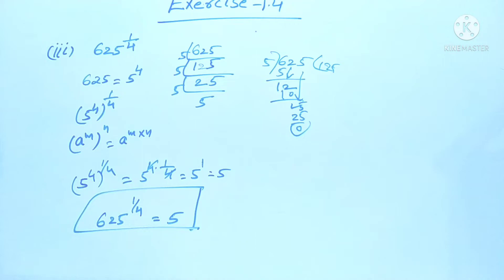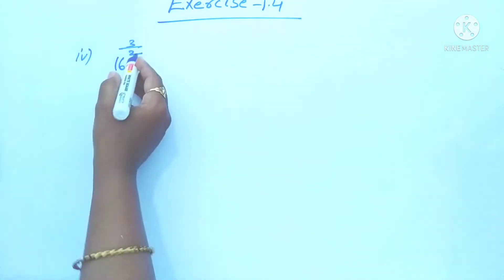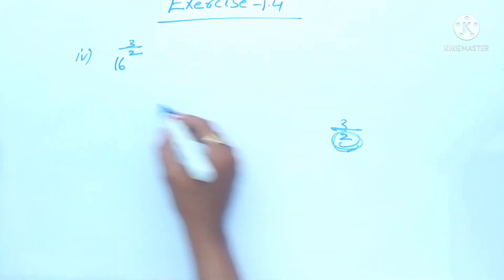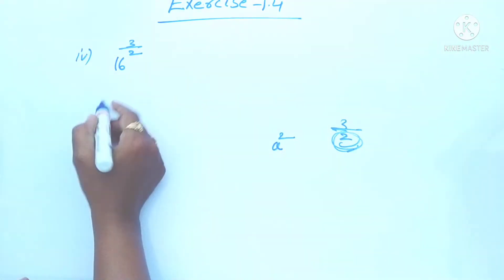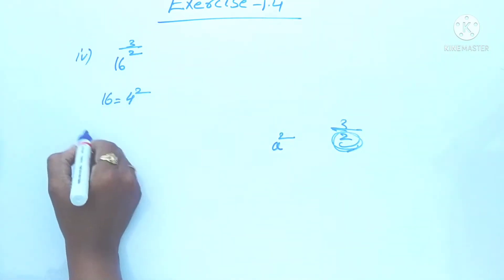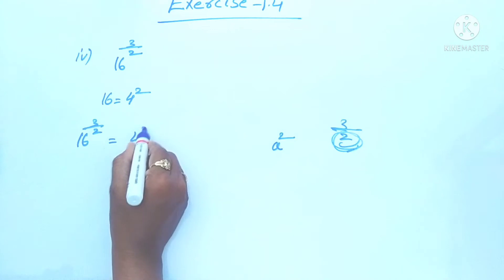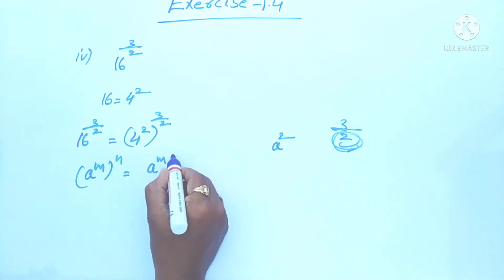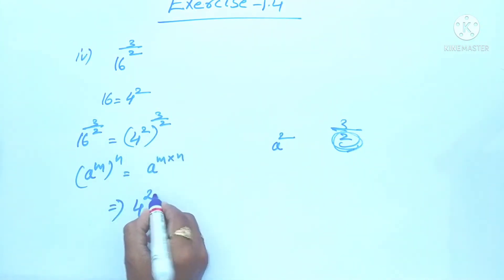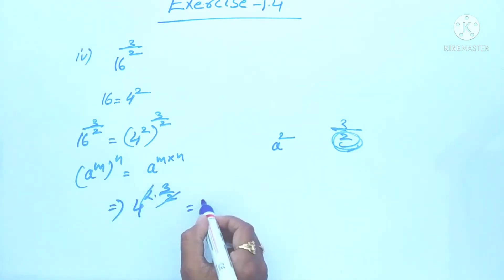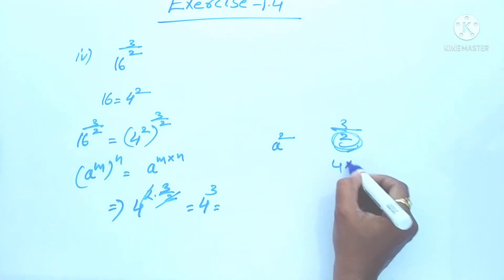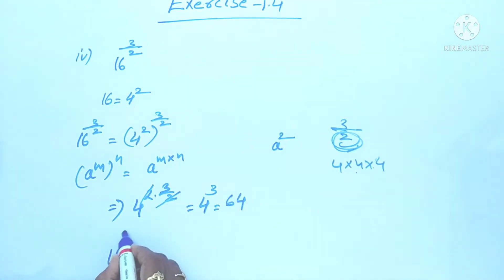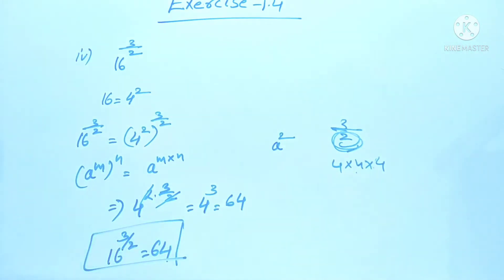Next, our fourth problem: 16 to the power 3 by 2. Since 2 is in the denominator, we check if we can write 16 as something to the power of 2. Since 4 times 4 is 16, we write 16 as 4 squared. So 16 power 3 by 2 equals 4 squared whole power 3 by 2. Using a power m whole power n equals a power m into n: 4 power 2 into 3 by 2, the 2's cancel, giving 4 cubed. 4 cubed is 4 times 4 times 4: 4 times 4 is 16, and 16 times 4 is 64. So 16 to the power 3 by 2 equals 64.